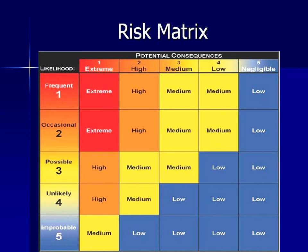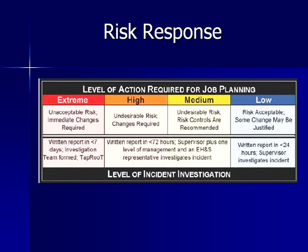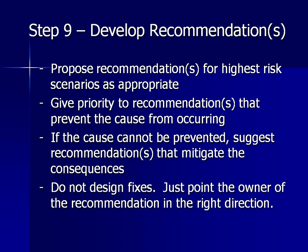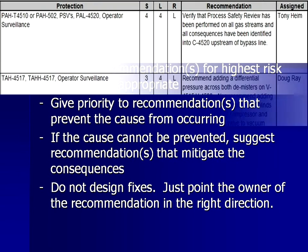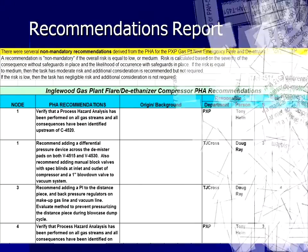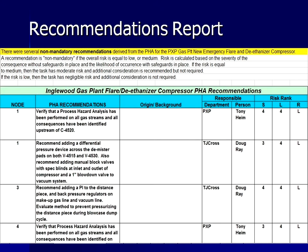This chart is an example of a risk matrix that assigns a risk based on the likelihood and consequence impact. Each client must determine the level of action required for each level of risk. After we have assessed these events, we will propose recommendations for the highest risk scenarios, giving priority to ideas that prevent the cause from occurring. If the cause cannot be prevented, we will suggest ideas that mitigate the consequences. The team should not try to design fixes at this point. The scribe records the recommendations and the assigned responsible parties, and it is important to assign responsible parties before the end of the PHA. After the PHA, the design team will prepare a report of recommendations and present it to the PHA team, who will either agree to those recommendations or develop additional work to mitigate hazards.